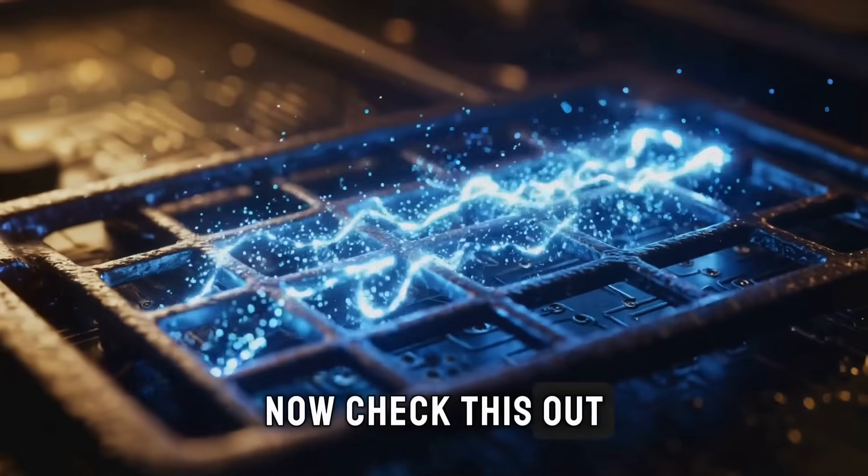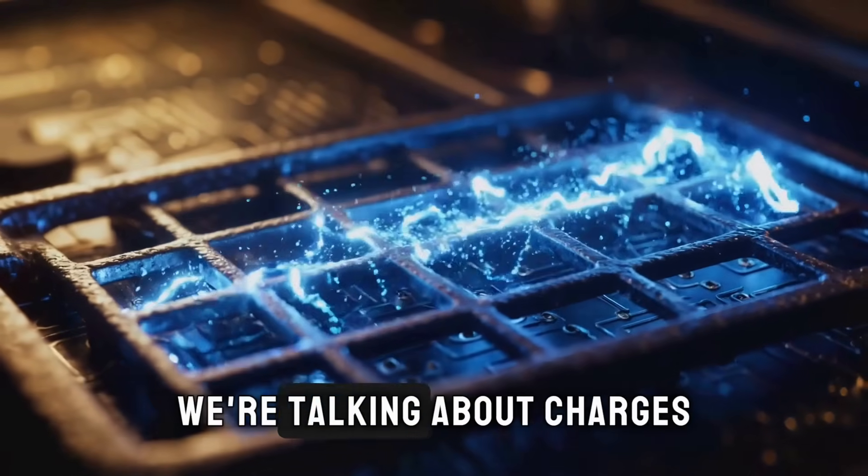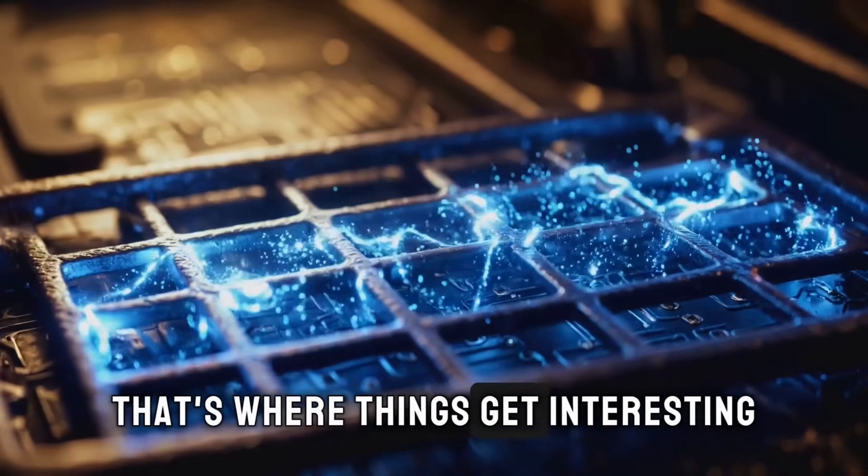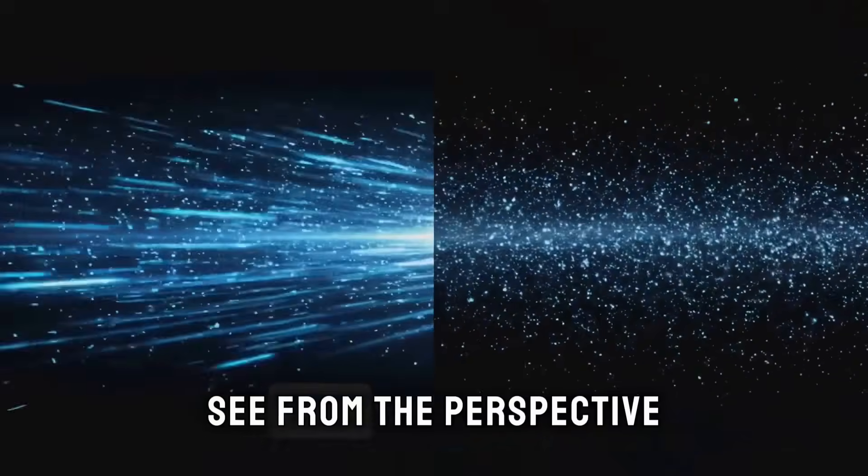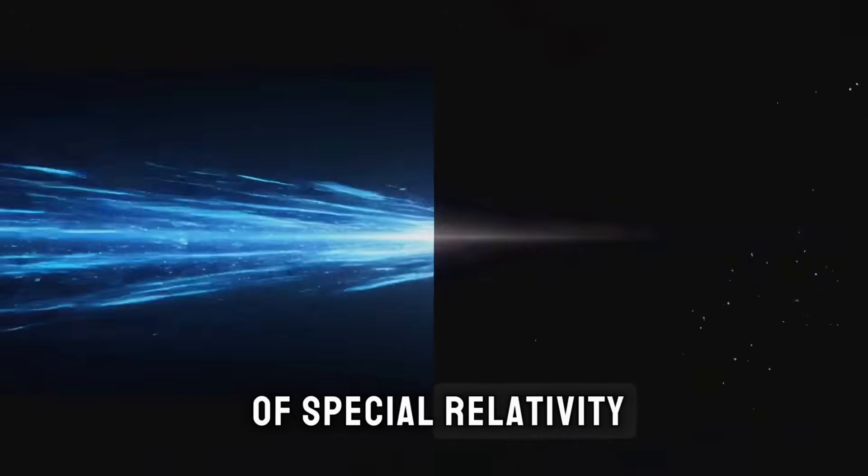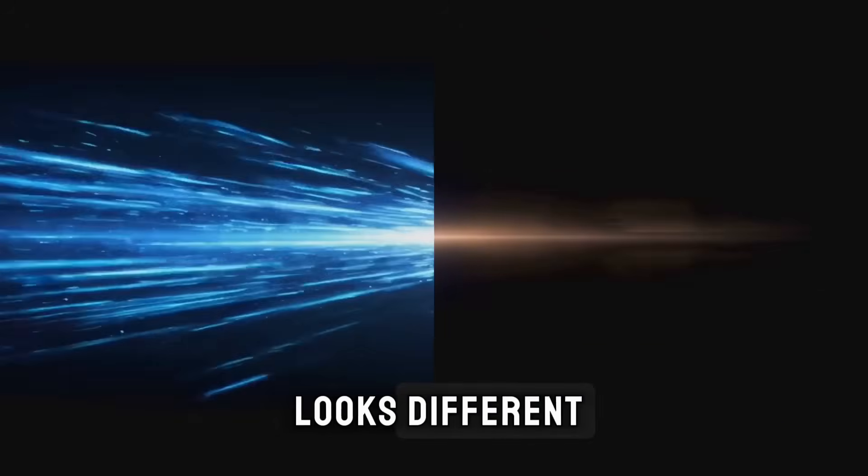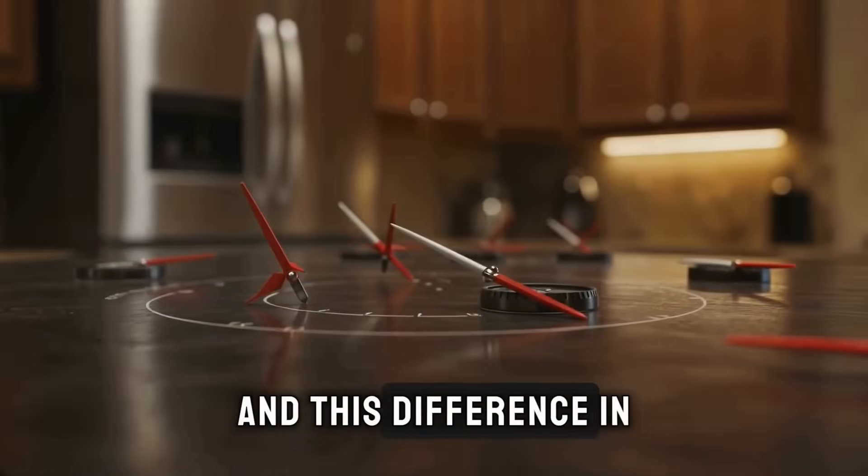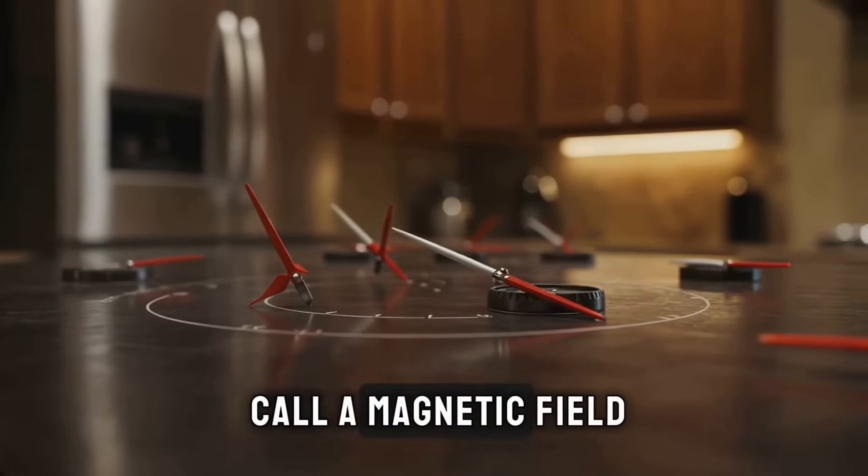Now check this out. When we talk about electricity, we're talking about charges. But when those charges start moving, that's where things get interesting. From the perspective of special relativity, a moving electric charge looks different depending on how fast you're moving relative to it. And this difference in perspective is what we call a magnetic field.